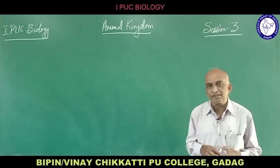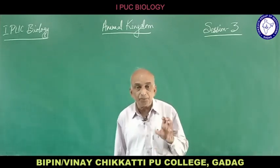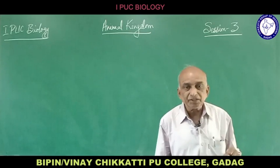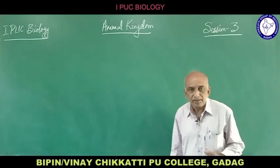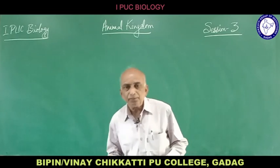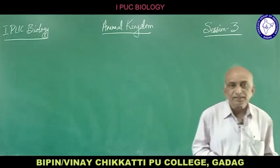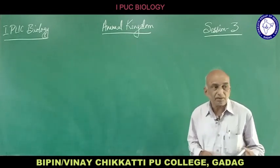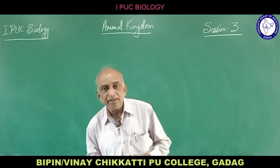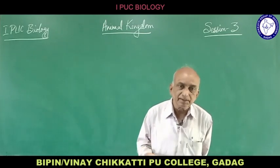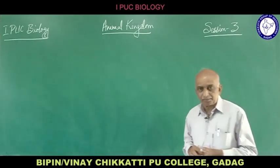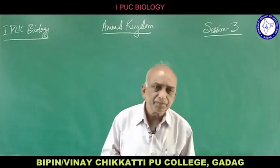In phylum Coelenterata, the specific character is the presence of nematoblast cells, which help in capturing food, defense, and attachment to habitat. In phylum Ctenophora, these are exclusively marine animals commonly called sea walnuts or comb jellies. The presence of eight rows of cilia is an important character of this phylum.